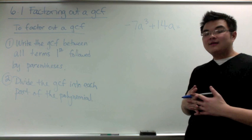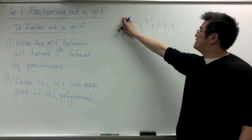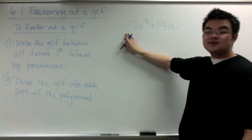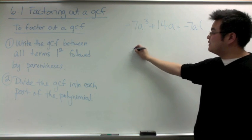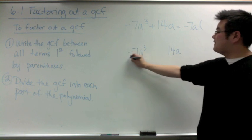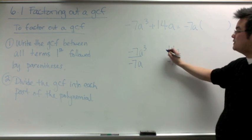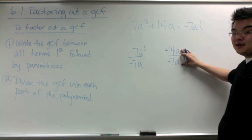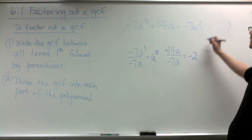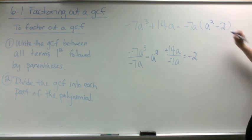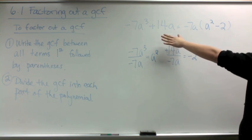A general rule: when you have a negative sign in front of any polynomial and you're factoring, you must factor out a negative as part of the GCF. Without the negative sign the GCF would be 7a, but because there's a negative sign we factor out −7a. Dividing each part by −7a and including the sign of the second term, we get a² for the first part and −2 for the second. So the result is −7a(a² − 2). You can verify by distributing: −7a · a² = −7a³ and −7a · (−2) = +14a.